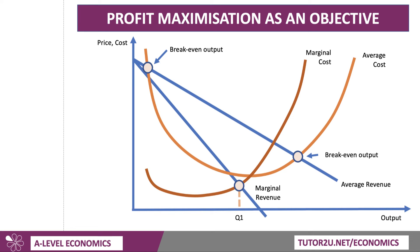Let's draw up to the demand curve and then draw across, because that's the price the firm can charge — that's what consumers are willing and able to pay for that output. There's the price per unit, P1. We just need to show also the cost per unit, AC1, which is there.